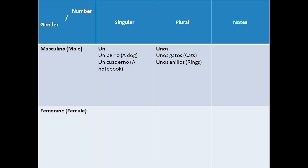Spanish is one of the few languages that have a plural form for the indefinite articles. For male words in plural form we use unos. Sometimes it could be translated by the word 'some.' For example, unos gatos, unos anillos — some cats, some rings.